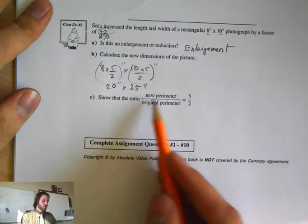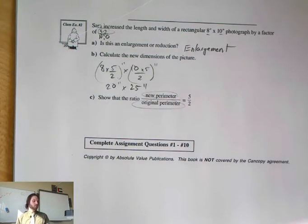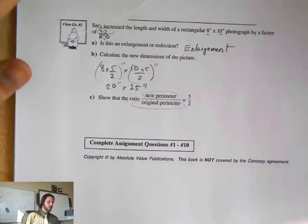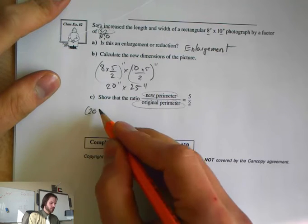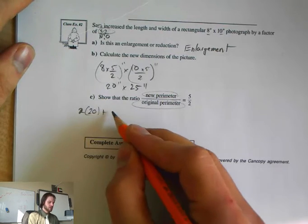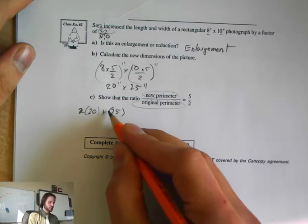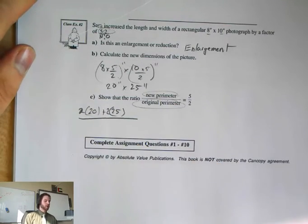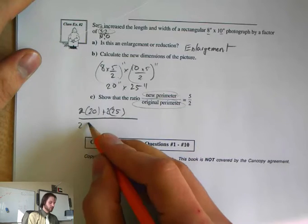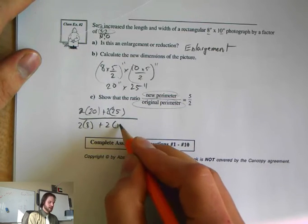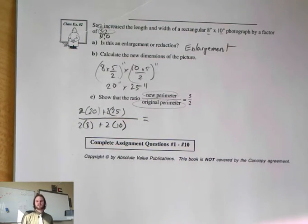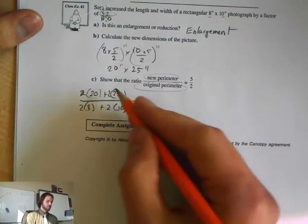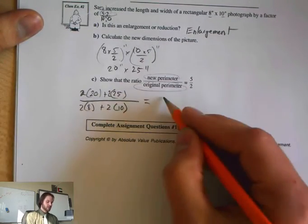Now it says show the ratio of new perimeter divided by old perimeter is that. Well, my new perimeter is going to be 20 multiplied by 2 plus 25 multiplied by 2 all over. Now what are my old dimensions? 2 multiplied by 8 plus 2 multiplied by 10. That's the formula for perimeter. This is going to be 40 plus 50 is 90.